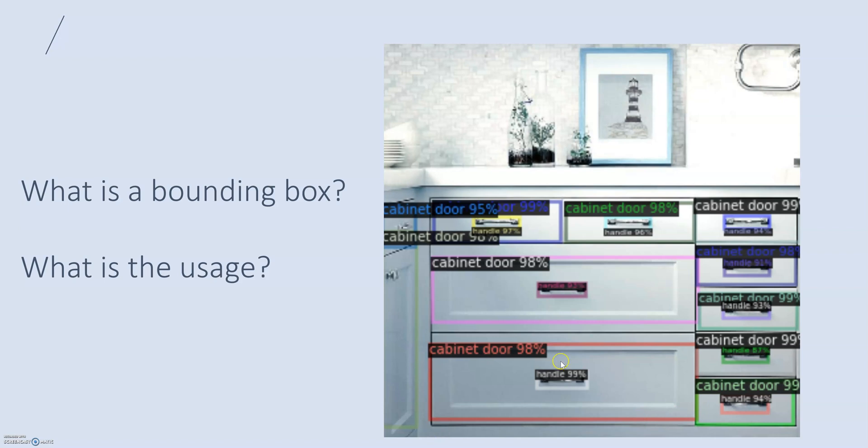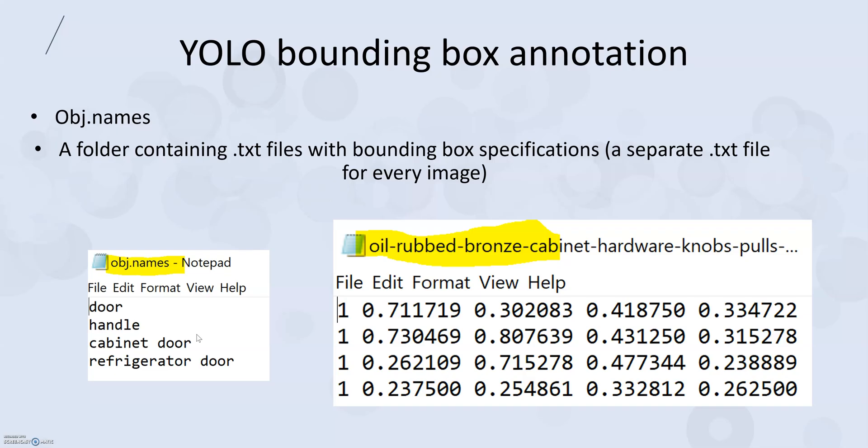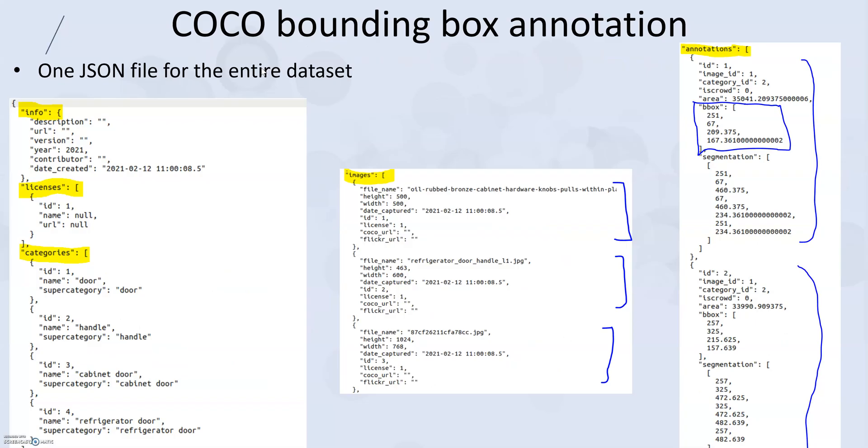Bounding boxes are used to label objects and then further train machine learning models. The problem is that depending on what machine learning model you use, they have different requirements for how the bounding box should be defined. The two main formats are YOLO and COCO.